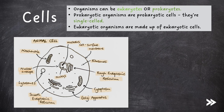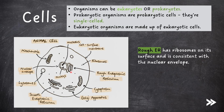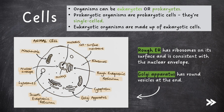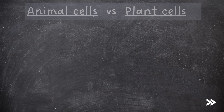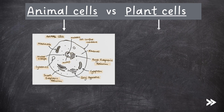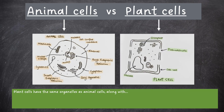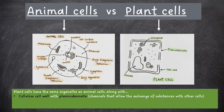I'll start by showing you an animal cell. It is very useful to be familiar with what I'm showing you now. Note that you can distinguish between Golgi apparatus and rough endoplasmic reticulum by seeing that the rough ER has ribosomes on its surface and is continuous with the nuclear envelope, whereas the Golgi apparatus has round vesicles at the end. Comparing plant and animal cells: plant cells have the same organelles as animal cells, but they also have a cellulose cell wall with plasmodesmata, which are channels that allow the exchange of substances with other cells. Plant cells also have a permanent vacuole and chloroplasts.